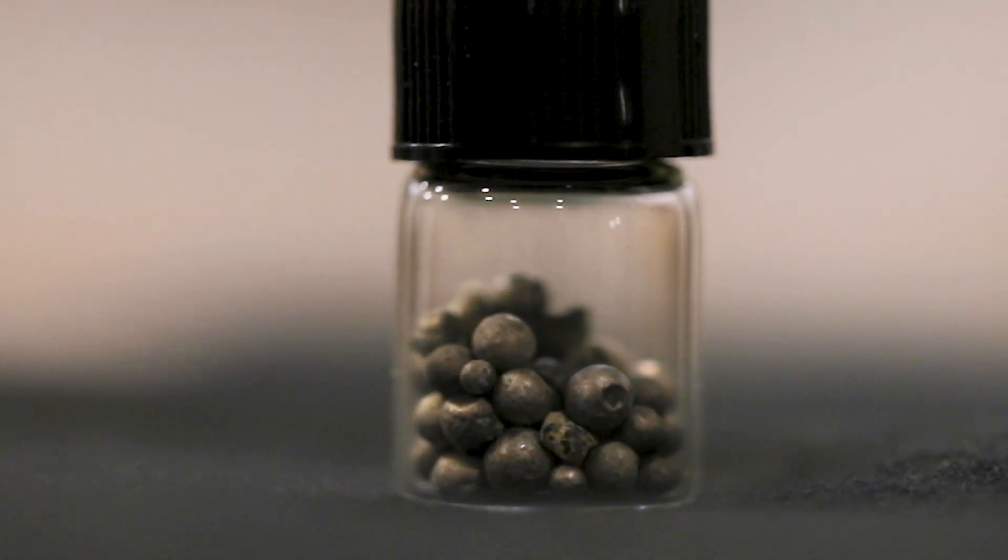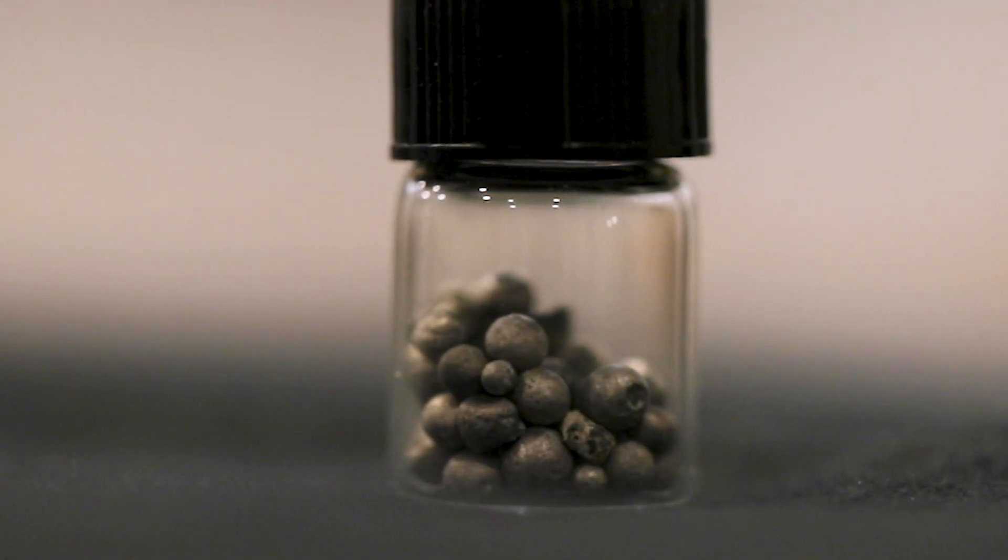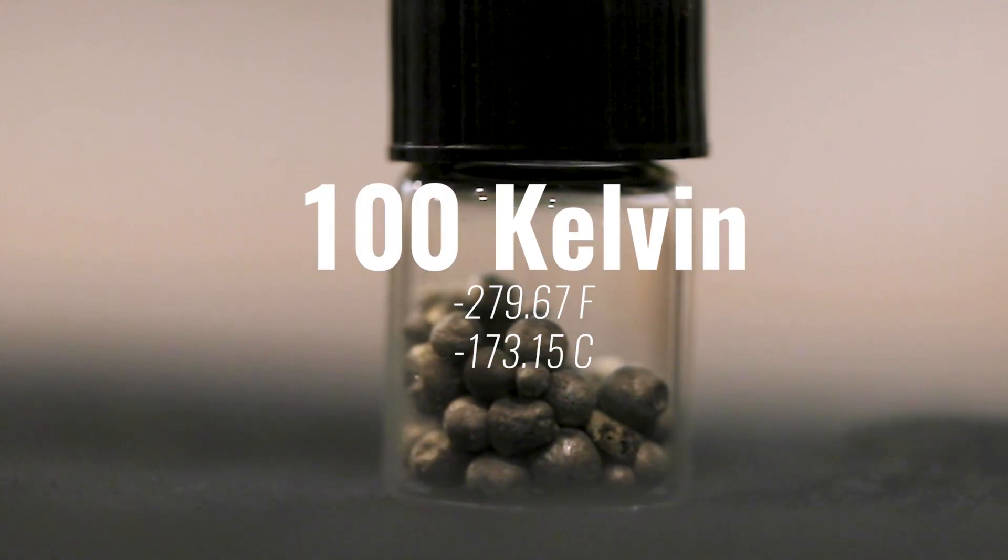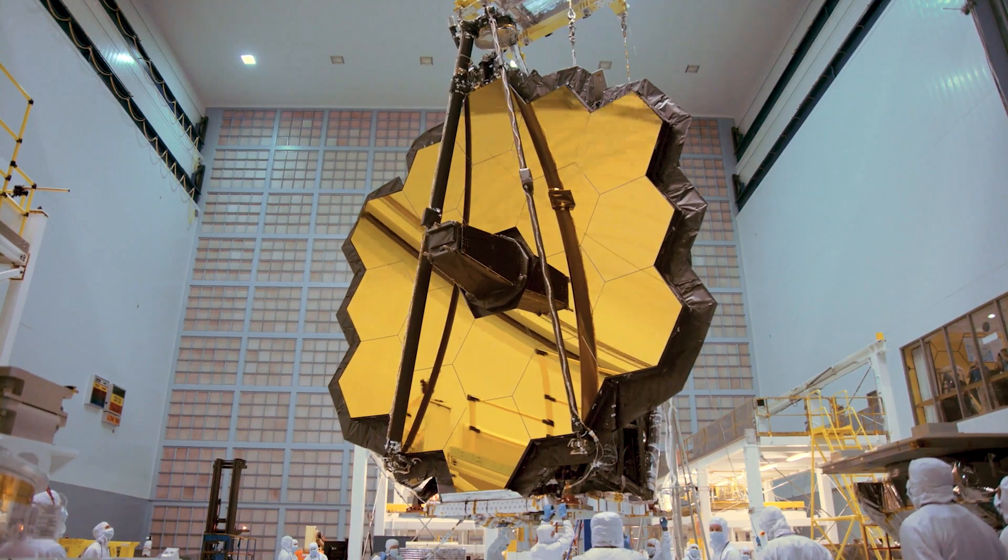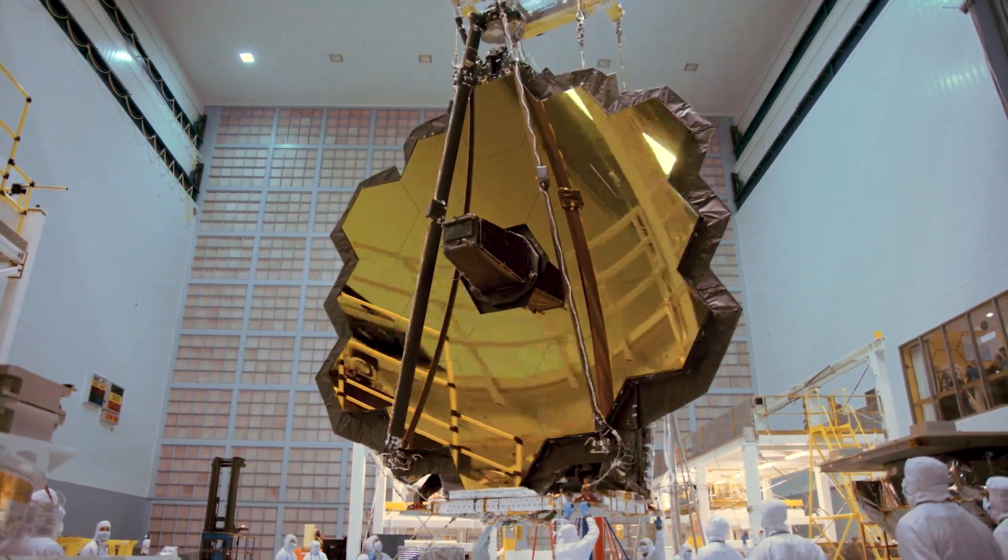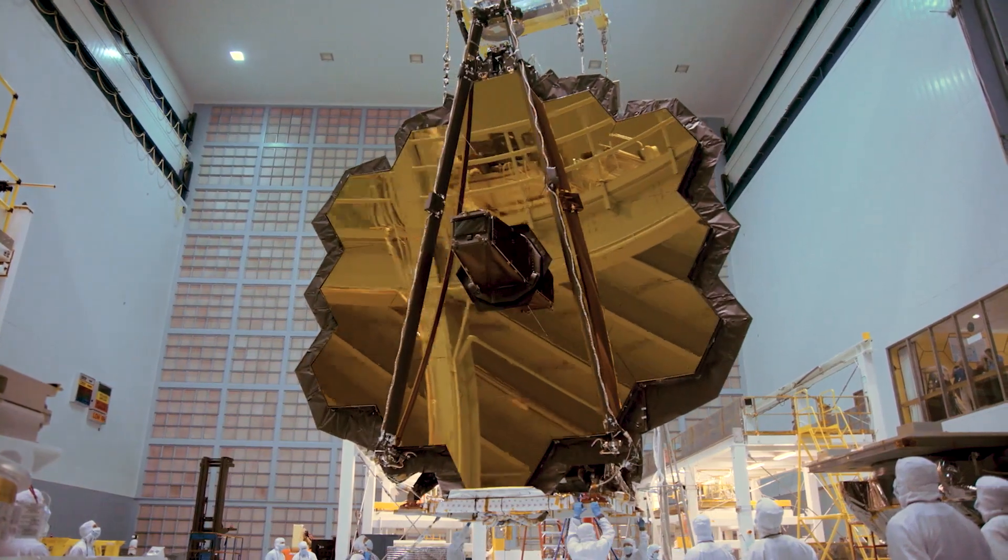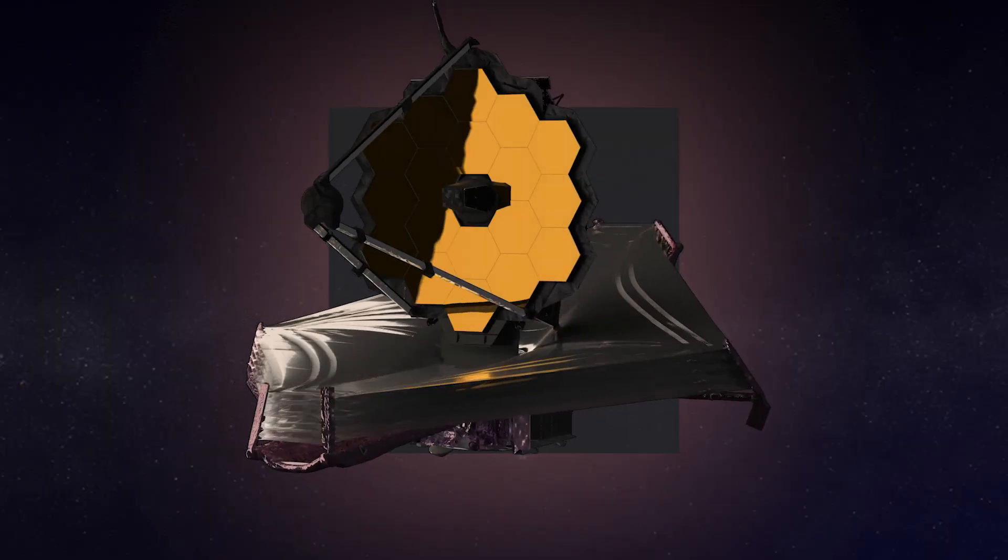Beryllium stops shrinking and changing its size when it cools below 100 Kelvin. So the mirrors we see are a little too large on Earth and will be the exact size they need to be once they are out in space.